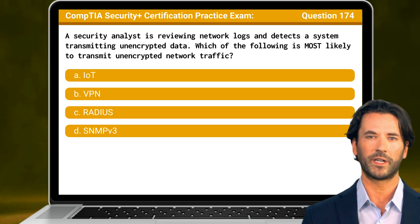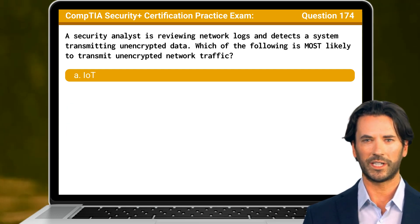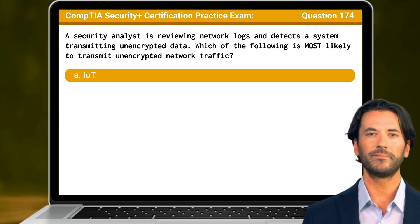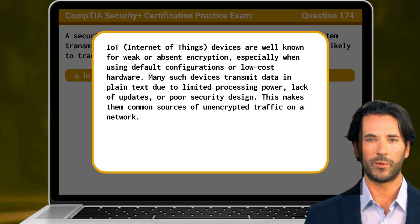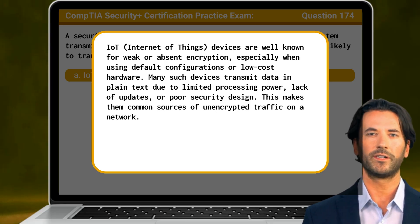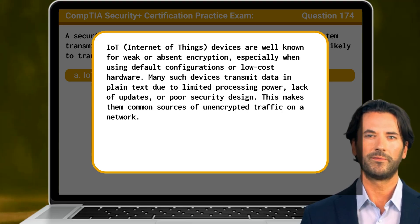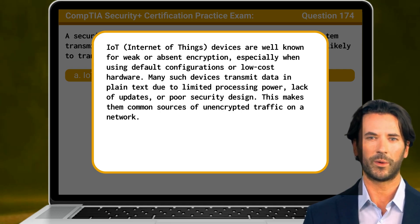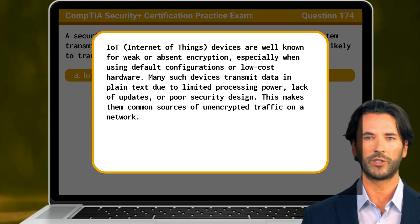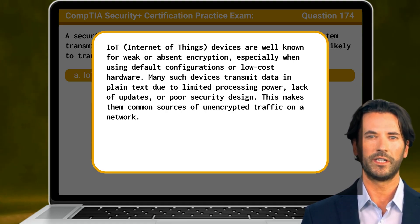The answer is A: IoT. IoT devices are well known for weak or absent encryption, especially when using default configurations or low-cost hardware. Many such devices transmit data in plain text due to limited processing power, lack of updates, or poor security design. This makes them common sources of unencrypted traffic on a network.